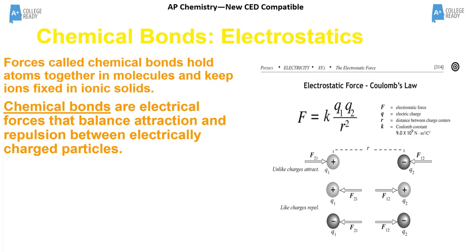A chemical bond is just the balance of attractive and repulsive forces. When two atoms are attracted to each other, the protons on one are attracted to the electrons on the other. But if you get too close, the protons of one start to push against the protons of the other, and the electrons start pushing against each other.